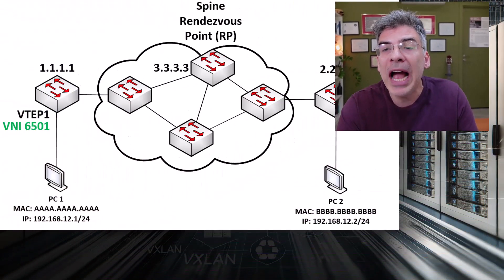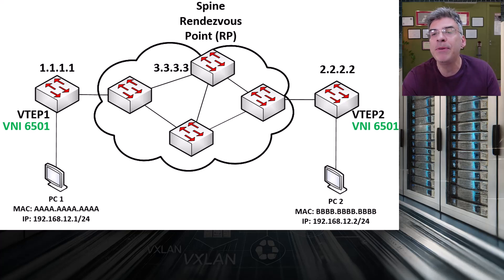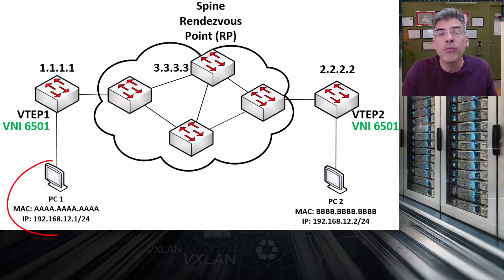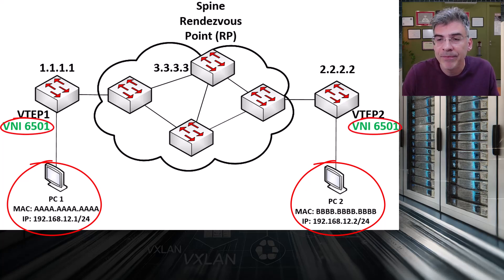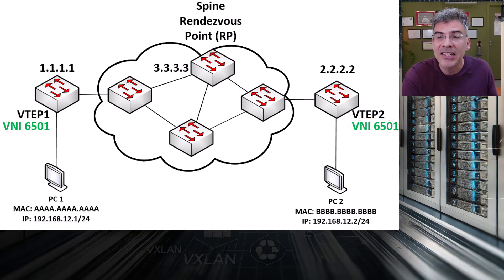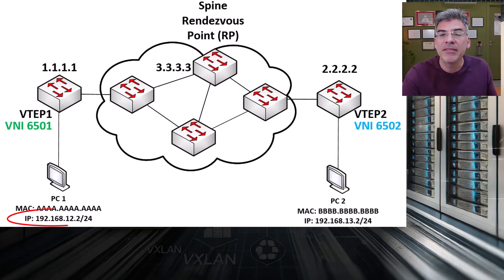In my previous video, we went over how to deploy an MPBGP eVPN control plane for VXLAN when spanning a single VNI across the VXLAN topology. Here we can see that both PC1 and PC2 are in the same subnet and they're using the same VNI. However, in this video, we'll be exploring the case where our hosts are in different subnets and thus in different VNIs.